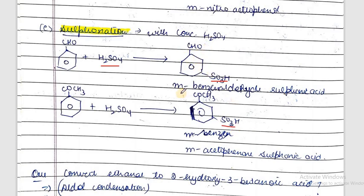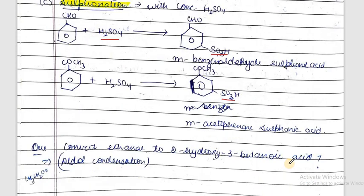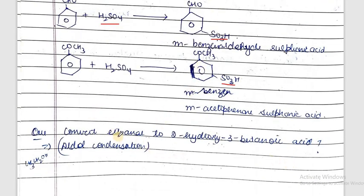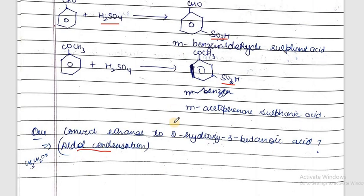The products are named meta-benzaldehyde sulfonic acid and meta-acetophenone sulfonic acid respectively. We can now write reactions for conversions involving all these reactions — for example, how to convert ethanol to 2-hydroxy-3-butanoic acid using aldol condensation, or how to convert benzaldehyde into benzaldehyde sulfonic acid. These are the chemical properties of aldehydes and ketones with special reference to condensation reactions. Thank you.